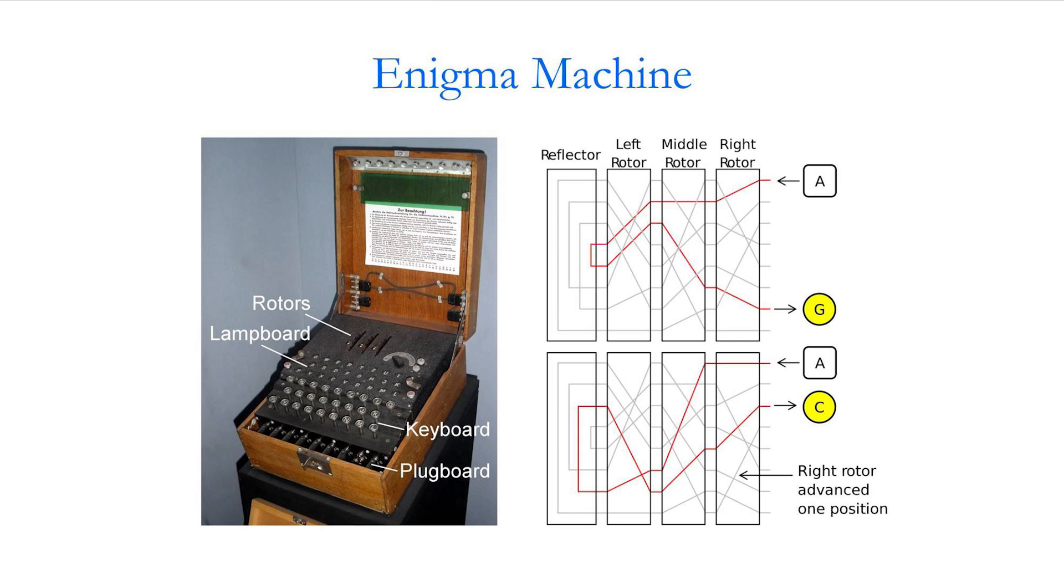And here is an illustration of it. Here are the three rotors, one, two, three, and the wiring of them was known to the cryptanalysts because of espionage by the French and the Polish. But you see here, I'm typing A, it goes around, reflected, and comes back. It's G.